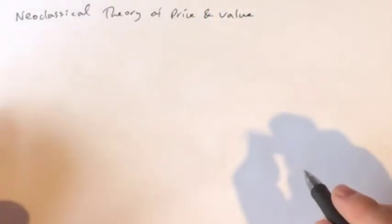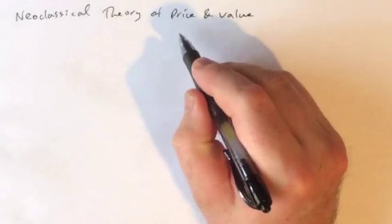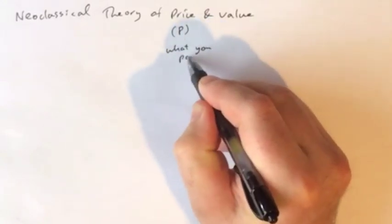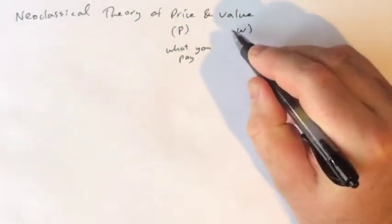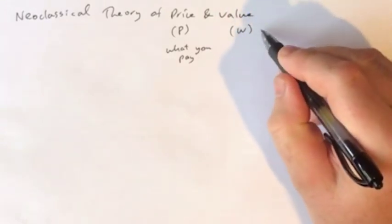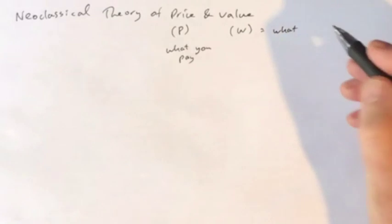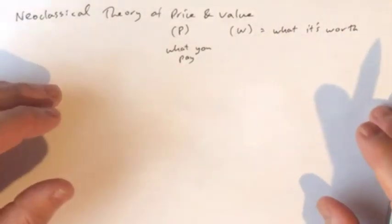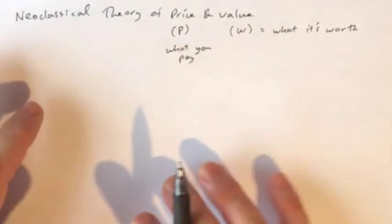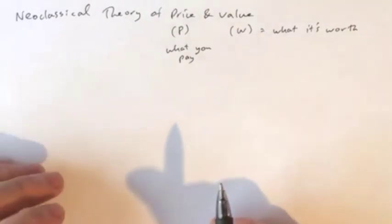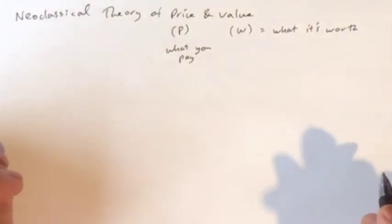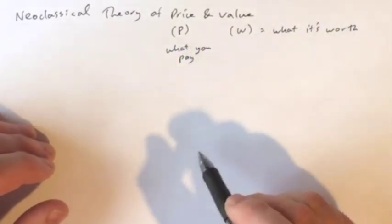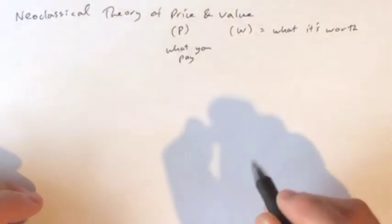So just to define these terms, we'll use P to stand for price, that is, what you pay for an item in a market, and W to stand for the value, that is, what an item is worth. So there's a long-standing tradition in economic theory of seeing the price and the value as being different things, related but different.